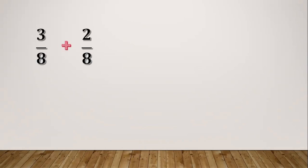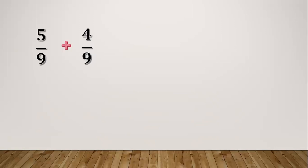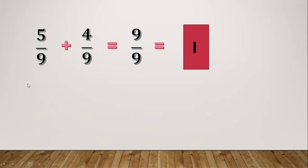Another example: three eighths plus two eighths. Same process — add the numerators: three plus two equals five, so five eighths. Next: five ninths plus four ninths. Five plus four equals nine. Copy the denominator which is nine, so nine over nine. Nine divided by nine equals one, so our final answer is one.